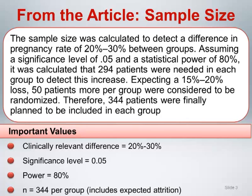We will also focus most of our discussion on the context of a randomized trial with two treatment groups. In the StatCrunch demonstration, we will look more closely at how these individual components are combined to arrive at an estimated sample size.